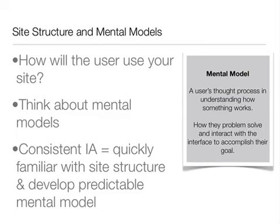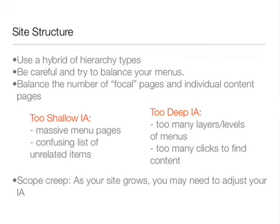Think about how you browse websites and the mental model you use. Different users will develop different mental models. Most often, you'll want to use a hybrid of hierarchy types, like a multi-tiered hierarchy with additional links embedded in the page content. Be careful organizing your content and try to balance your menus — balance the number of focal pages, such as the homepage and pages off the main menu, with individual content pages. If you try to make every page important, none of the pages will be.